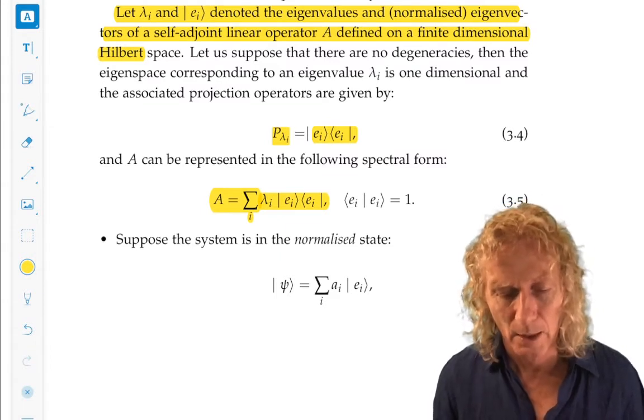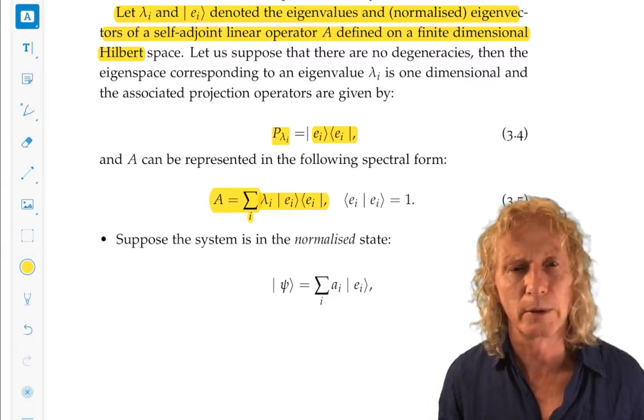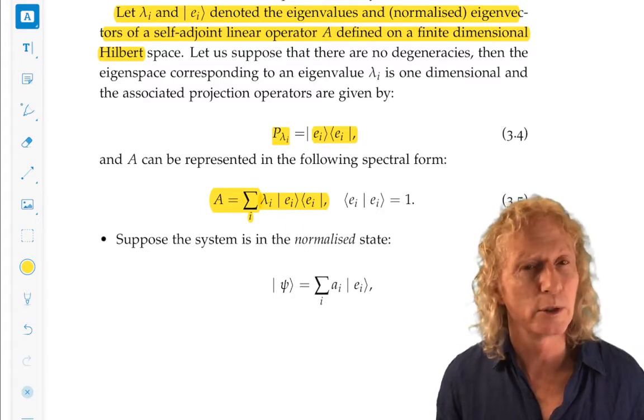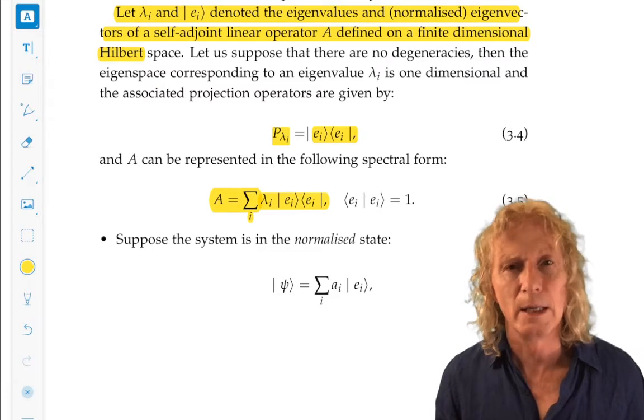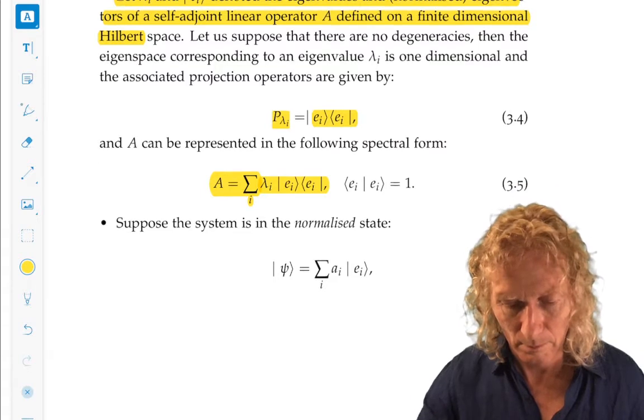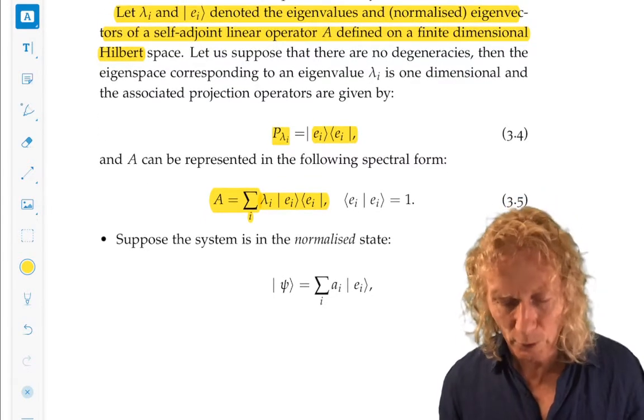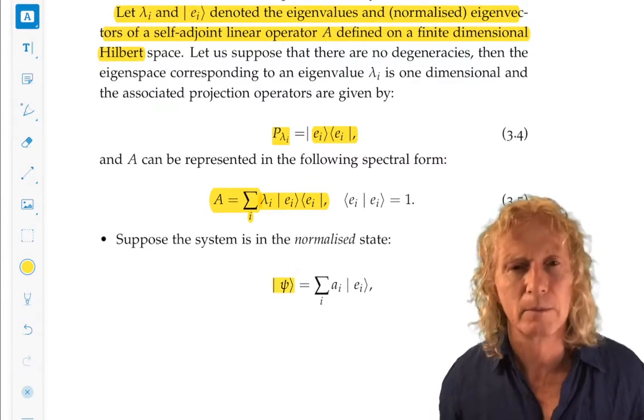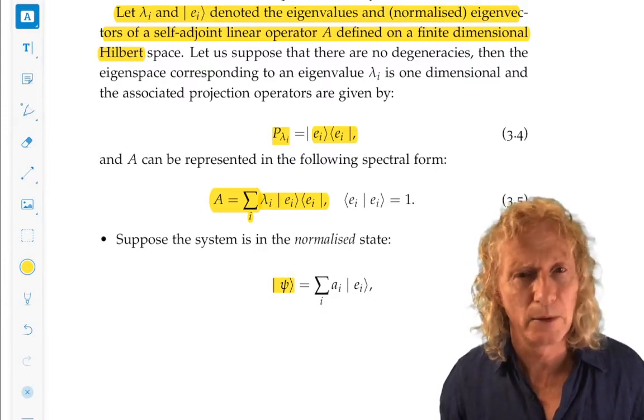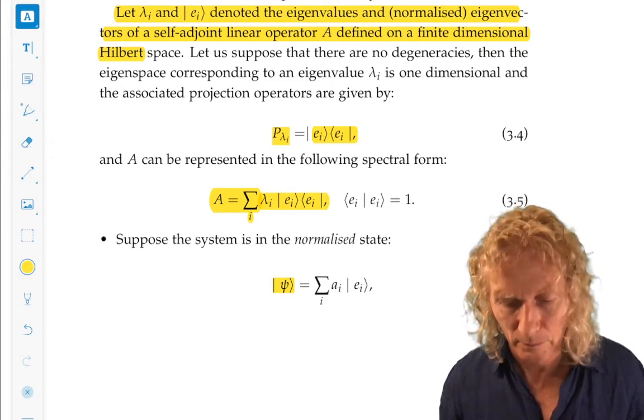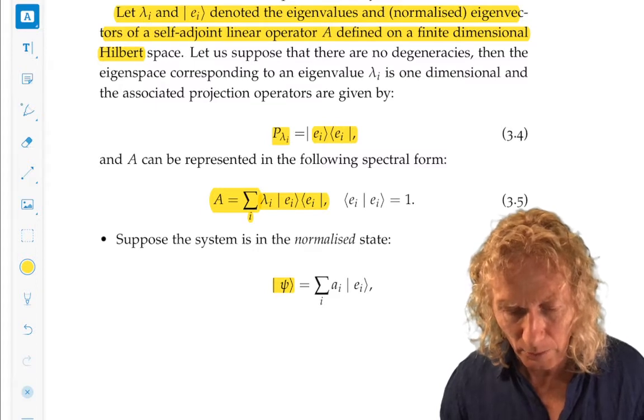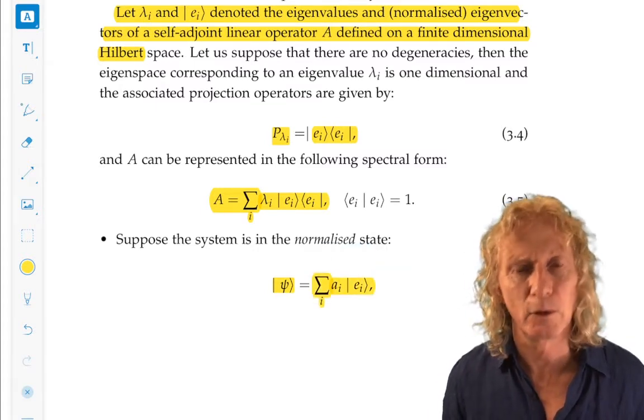We have a finite dimensional complex inner product space, n dimensions, no degeneracies. So, n eigenvectors, n distinct eigenvalues. Also, we can represent A in spectral form. We had this result at the end of chapter one. Go back and look at that. I said we're going to use that quite a bit and here's where we really start using it. This is the setup. Let's consider an arbitrary state.